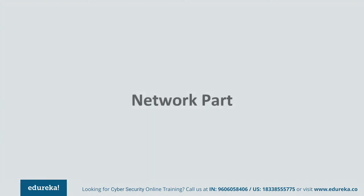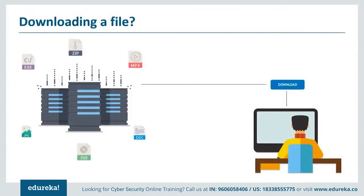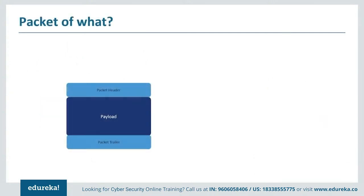First we are going through the network part. I think it's right to assume all of you watching this video have downloaded some sort of file in the past — whether it be a movie, a TV show, some software, or music. But most of you don't really know how the whole process works. When you click that download button, your whole file doesn't really get sent to you all at once. Rather, it is broken down into tiny units called packets, which are then transmitted over a network to your computer.